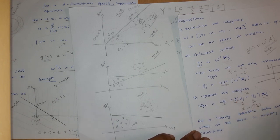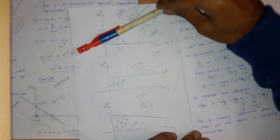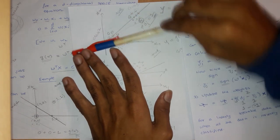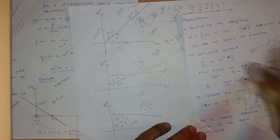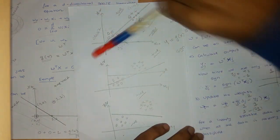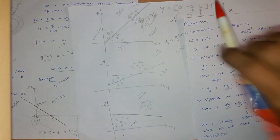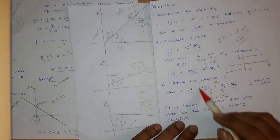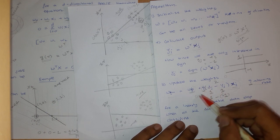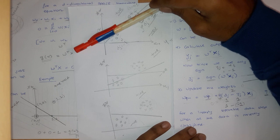The term eta is the learning rate. Eta controls how much we shift the weights towards the input. A large eta causes rapid shifts, which can be a problem for complex data because convergence becomes difficult. A small eta leads to smaller, more careful updates. Typically eta is set to values like 0.3 or 0.5, depending on the application.